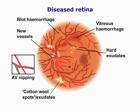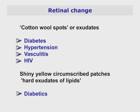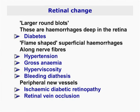New fronds of blood vessels emanating from the disc are associated with ischaemic diabetic retinopathy. The retina should be of uniform colour and free from scars or pigmentation. Note any lesions such as soft white patches known as cotton wool spots or exudates, which may be signs of diabetes, hypertension, vasculitis or HIV. Shiny yellow circumscribed patches are hard exudates of lipids, often seen in diabetics. Larger round blot hemorrhages are deep in the retina and may be caused by diabetes. Flame-shaped superficial hemorrhages along nerve fibres are signs of hypertension, gross anaemia, hyperviscosity or a bleeding diathesis.